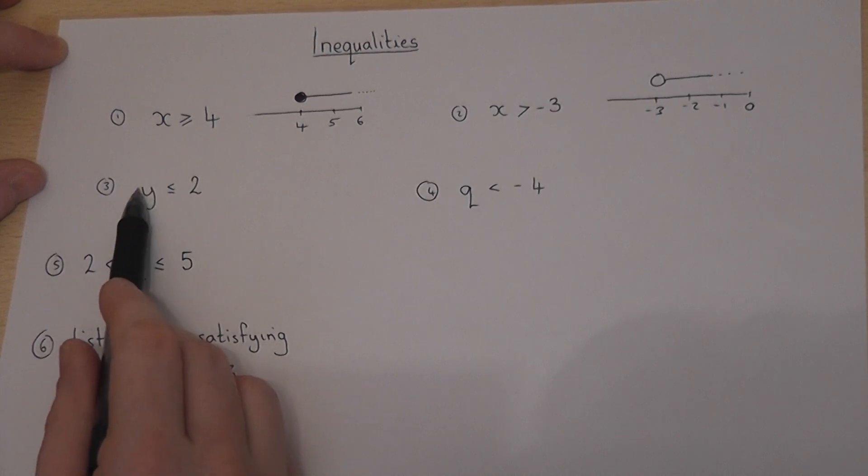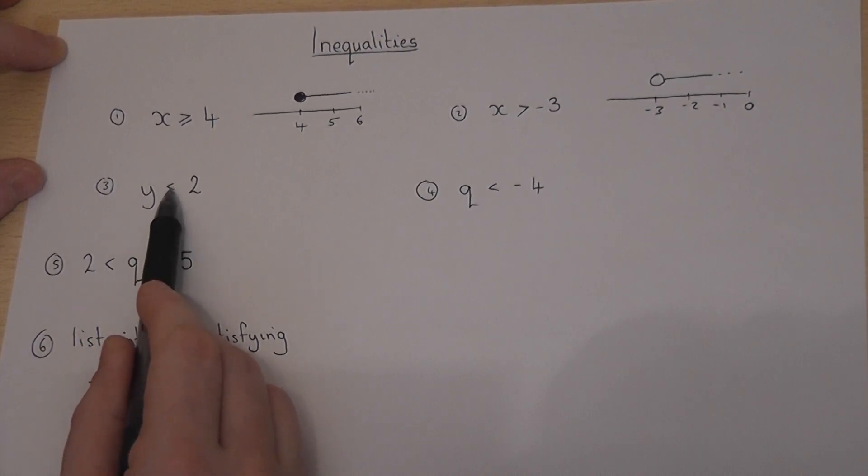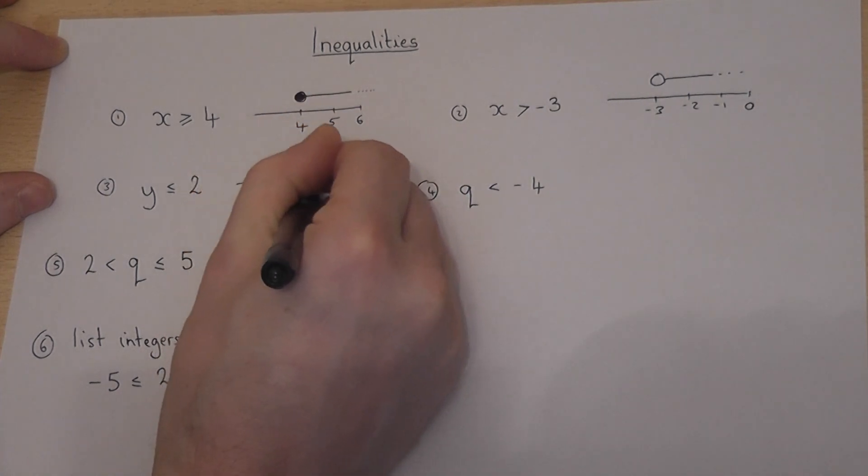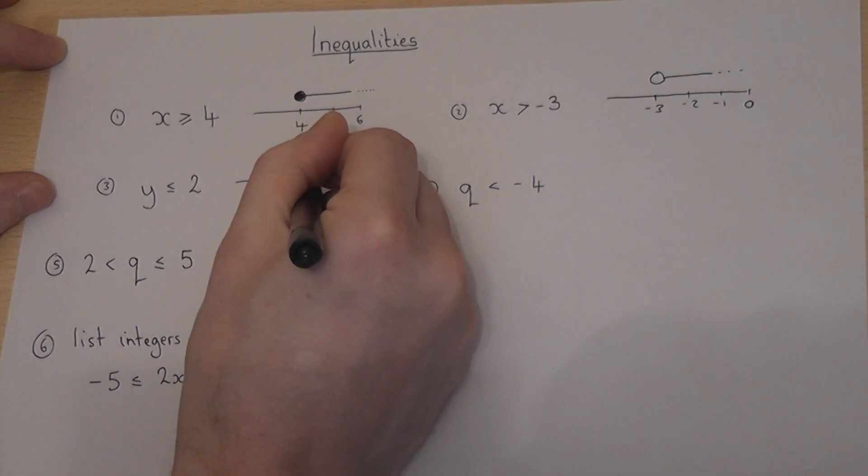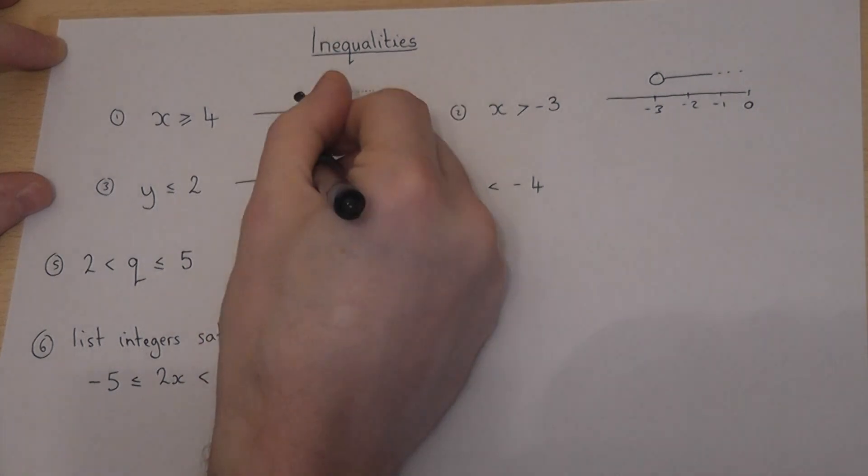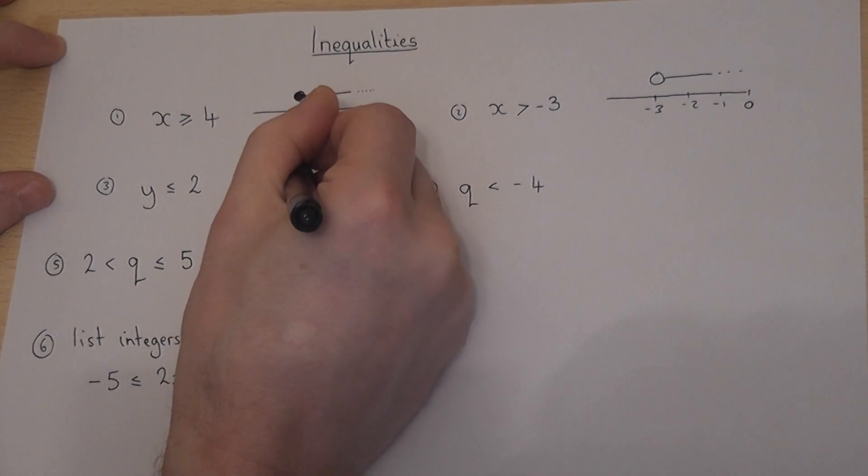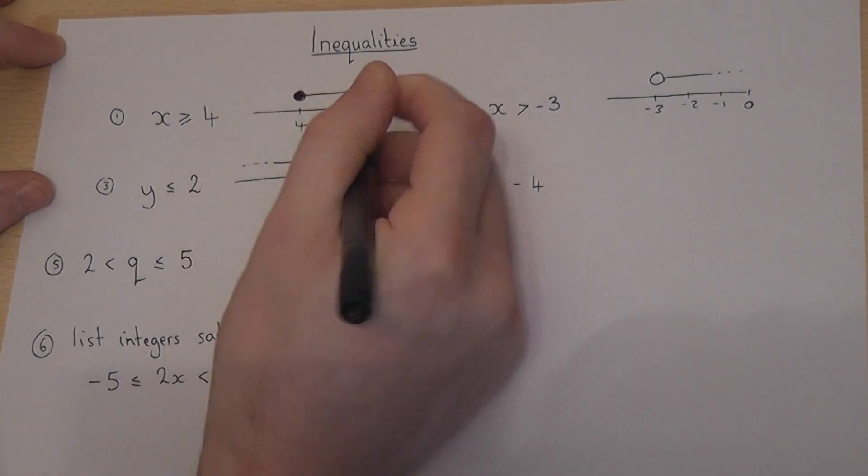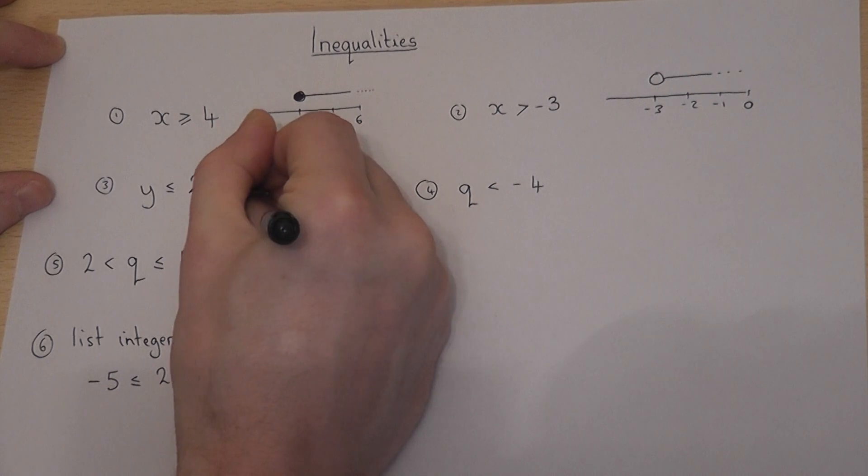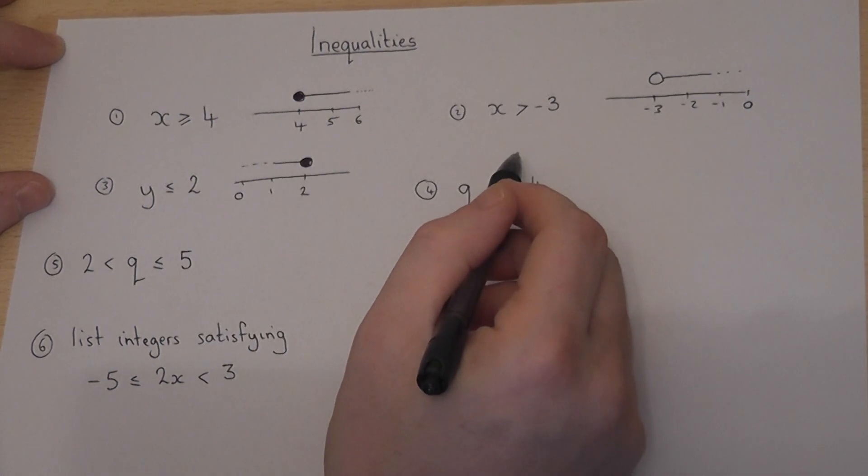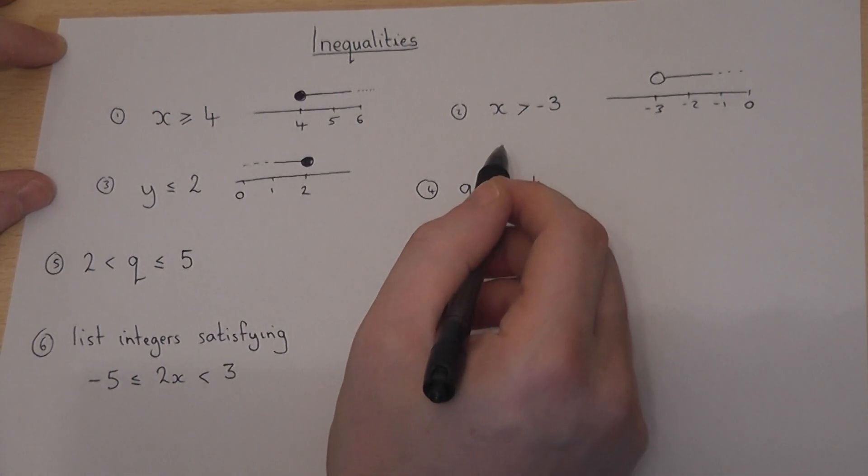The third one is now y is less than but including 2. So on a number line, I can put 2 on, I can include 2, so I color the circle in. But now I'm less than 2, so I go to the left. So any number whatsoever less than 2. Don't forget that also includes decimals and negatives.